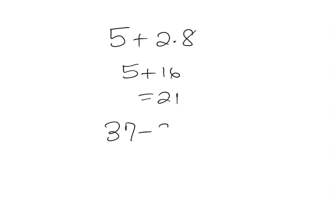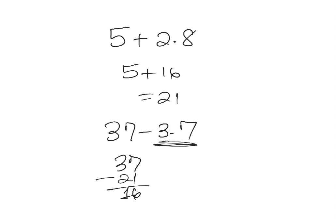Now let's look at number four: thirty-seven minus three times seven. Again, you take care of the multiplication first, so three times seven is twenty-one. That gives us thirty-seven minus twenty-one, which leaves you with sixteen. We always do multiplication before any addition or subtraction.